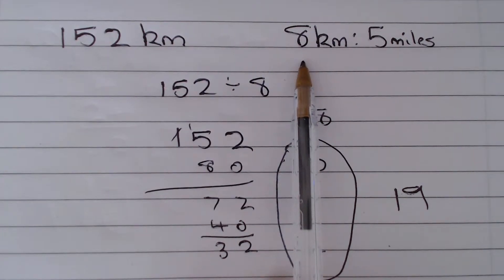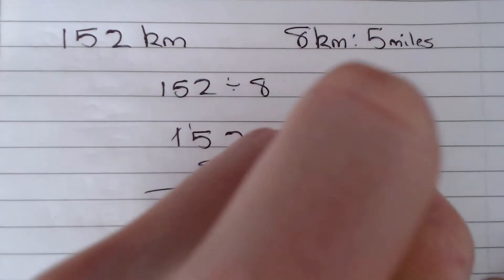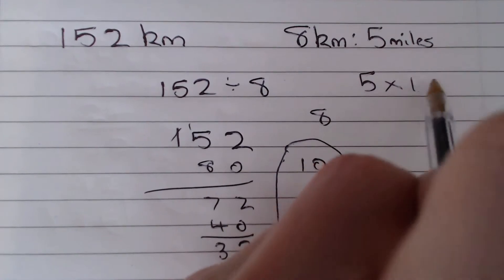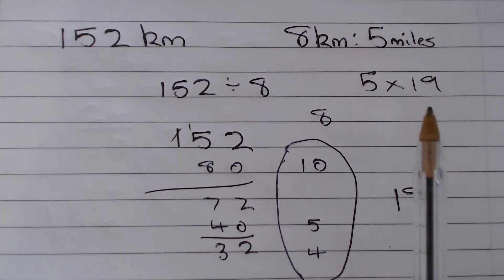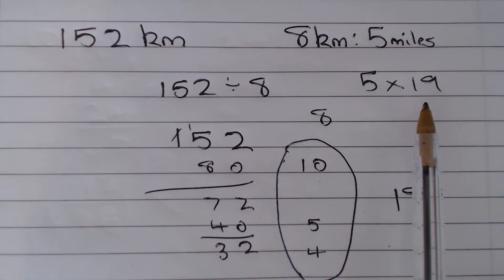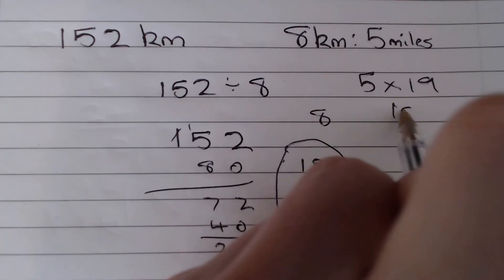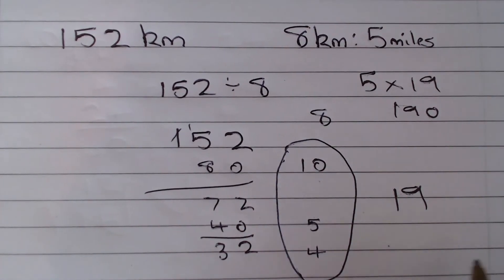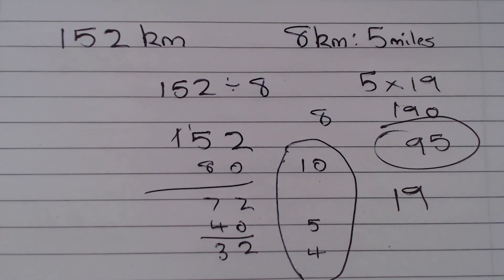So we need to multiply this by 19. So we need to do 5 multiplied by 19. Now remember to multiply a number by 5 quickly, we multiply it by 10 and divide it by 2. So 5 times 19 is the same as 10 times 19, 190. And then we need to divide that by 2, which will give us 95. So the answer to this question is 95 miles.